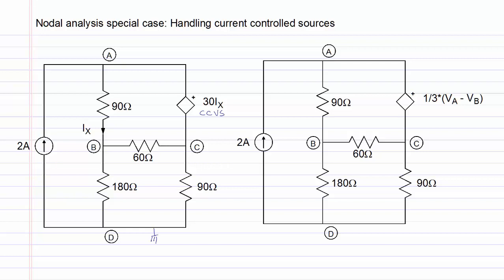Since the controlled source depends on a current, and we would like to eliminate all currents as variables in nodal analysis, we will reformulate the circuit so that the current IX is eliminated.